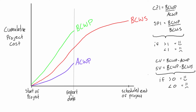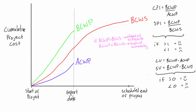To quickly figure out if we're ahead of or behind schedule just by looking at the graph, we use the SPI ratio. If BCWP is greater than BCWS at the reporting date, that's a bigger number divided by a smaller number, giving us a value greater than one — meaning we are ahead of schedule. If BCWP is less than BCWS, then BCWS is the larger number, giving a fraction less than one, which indicates we are behind schedule.